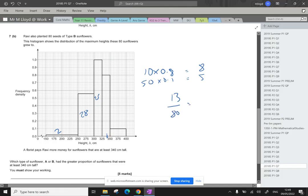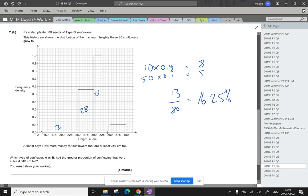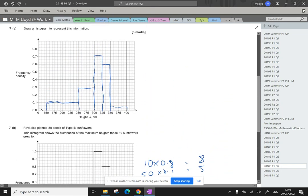So that's going to be 13 out of 80. And I want to convert that to a percentage. 13 out of 80 times by 100 is 16.25%. Okay. I'm going to go back to part A now. So it's at least 340 centimeters tall.